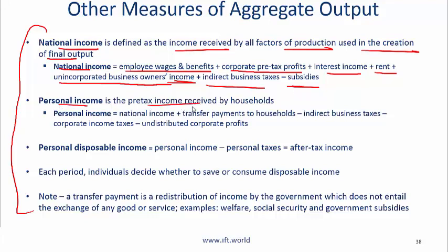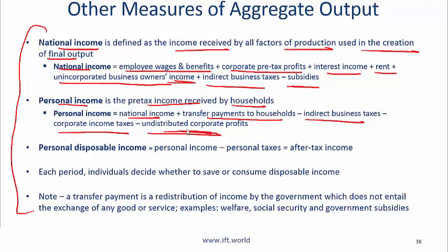Personal income is the pre-tax income received by households, equal to national income plus transfer payments to households — the payments governments make to households — minus indirect business taxes, minus corporate taxes, and minus undistributed corporate profits (retained earnings). Personal disposable income is personal income minus personal taxes. This is the easiest one to remember.